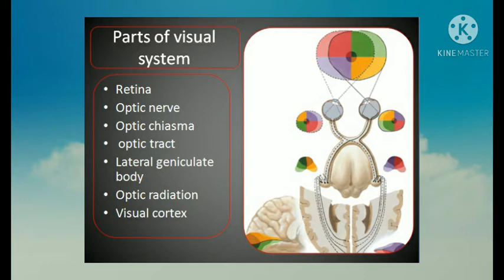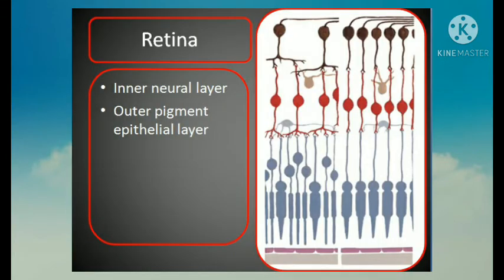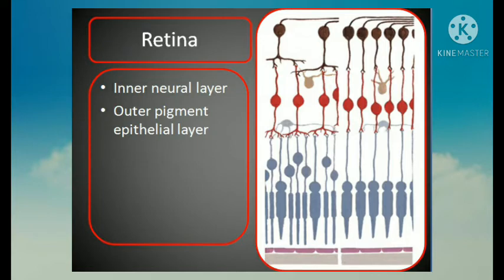The visual system also includes the optic radiation or geniculo-calcarine tract and the visual cortex. The retina forms the inner photosensitive coat of the eyeball. It consists of two layers: an inner neural layer and an outer layer of pigment epithelium. The inner neural layer contains three basic layers of cells: an outer layer of rod and cone cells, a middle layer of bipolar cells, and an inner layer of ganglion cells. The other cells are association neurons and neuroglial cells.